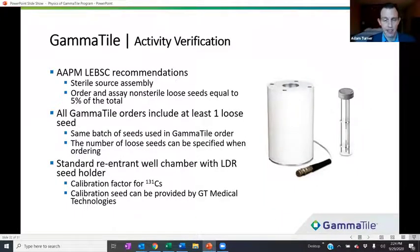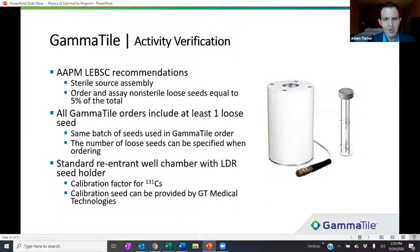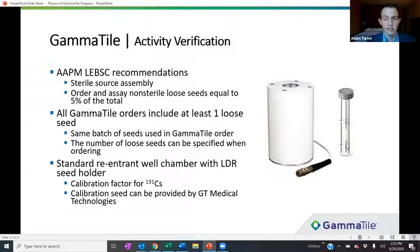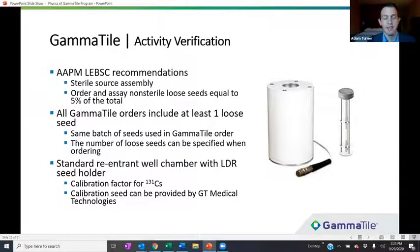Regarding activity verification, the AAPM low energy brachytherapy source calibration working group recommends that for sterile source assemblies like Gamma Tile, physicists order an assay of non-sterile loose seeds equal to about 5% of the total. All Gamma Tile orders will include at least one loose seed from the same batch of seeds used to build your tiles, and more can be specified when placing your order. We recommend using the standard methods of a re-entrant well chamber with an LDR seed holder and obtaining a calibration factor for Cesium-131. GT can help with calibration either through an accredited dose calibration laboratory or by providing a calibration seed with an exact activity certificate for in-house calibration.